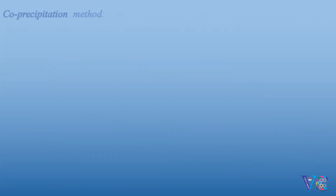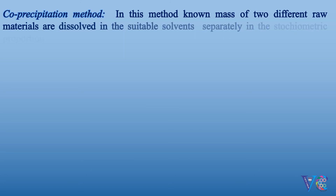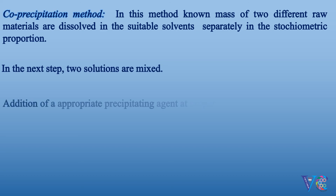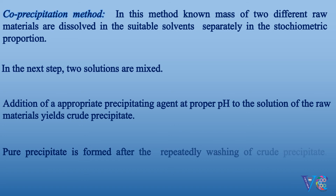In the co-precipitation method, known masses of two different raw materials are dissolved in suitable solvents separately in stoichiometric proportion. The two solutions are then mixed. Addition of an appropriate precipitating agent at proper pH to the solution of raw materials yields a crude precipitate. Pure precipitate is formed after repeatedly washing the crude precipitate, and breaking of the pure precipitate gives nanoparticles.